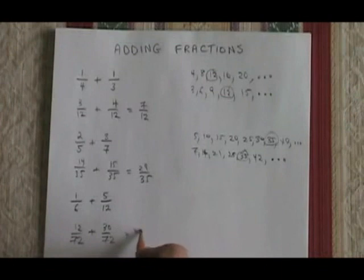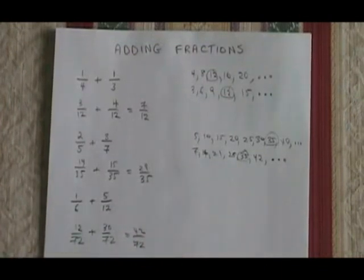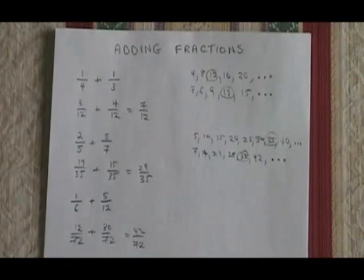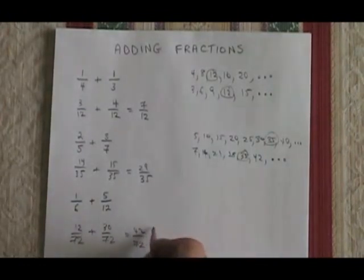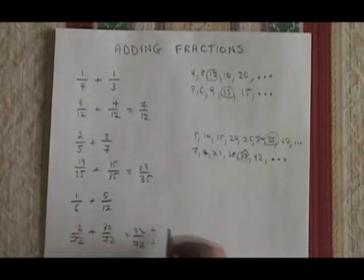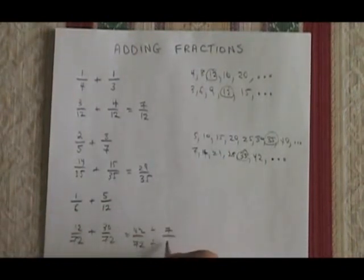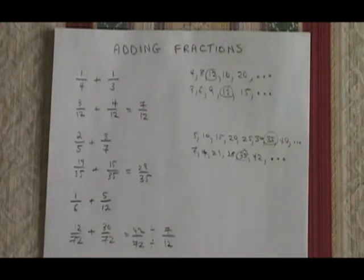12 plus 30 is equal to 42. So 42 over 72 is my answer, but it needs to be reduced. 42 and 72 have a common factor of 6, so I'm going to divide both of them by 6, and I get 7 over 12. My final answer is 7 twelfths. It is the right answer. So the shortcut worked.